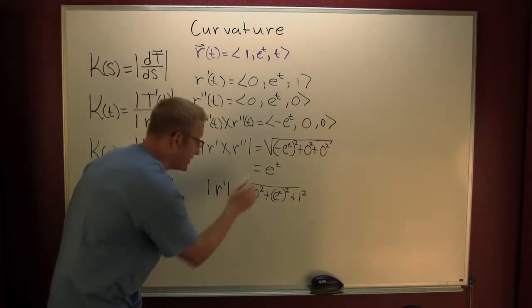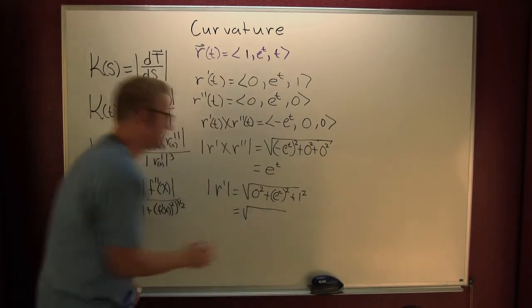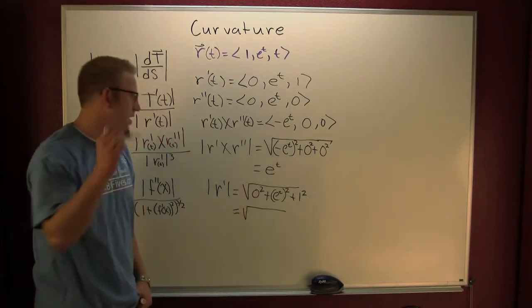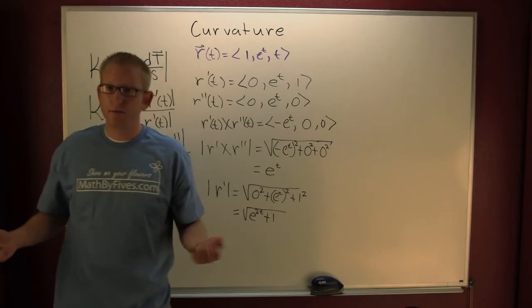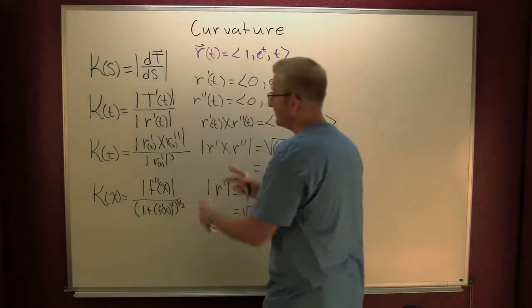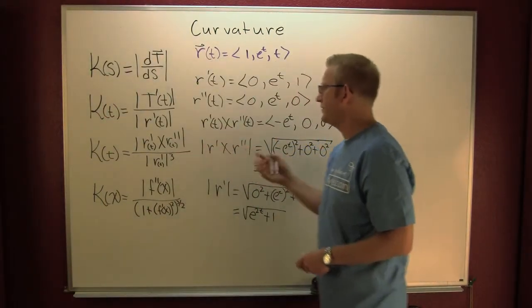Very nice. So I'm going to find that this is the square root, power raised to a power you multiply, e to the two t plus one. Now we have all the pieces to find our curvature using this form, our third form down there.